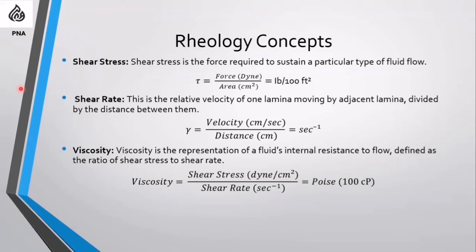Shear rate is the relative velocity of one lamina moving by an adjacent lamina, divided by the distance between them. It equals velocity divided by distance — velocity in centimeters per second and distance in centimeters — so the unit of gamma (shear rate) is seconds minus one (s⁻¹).